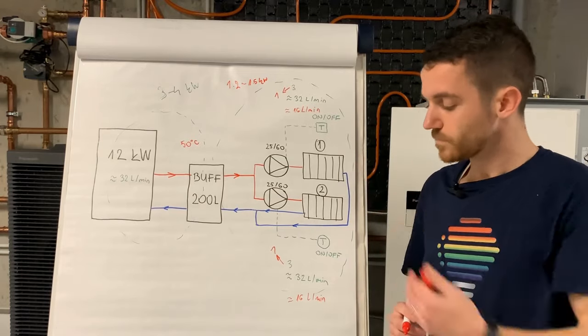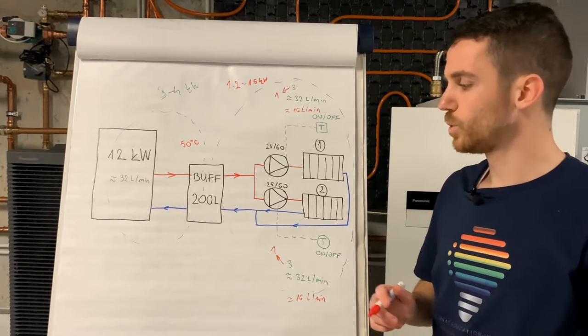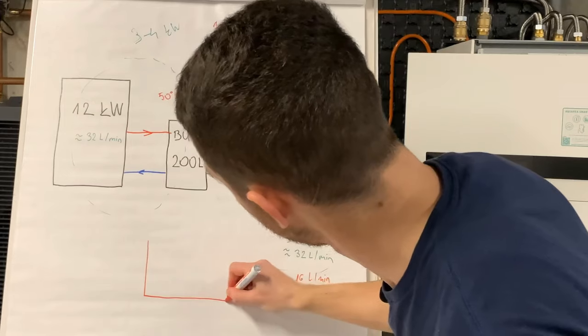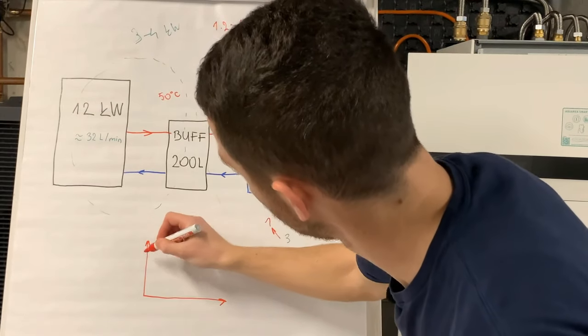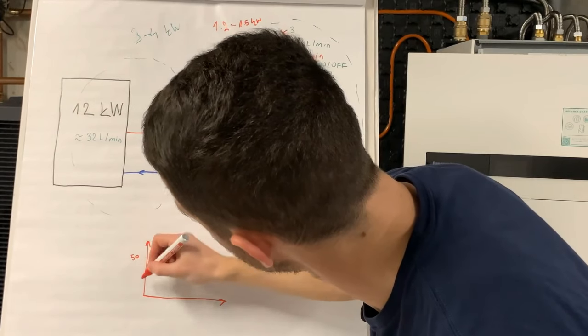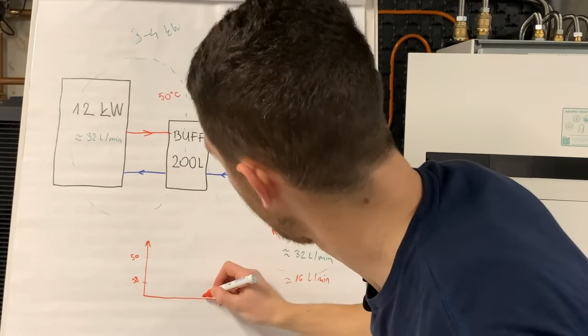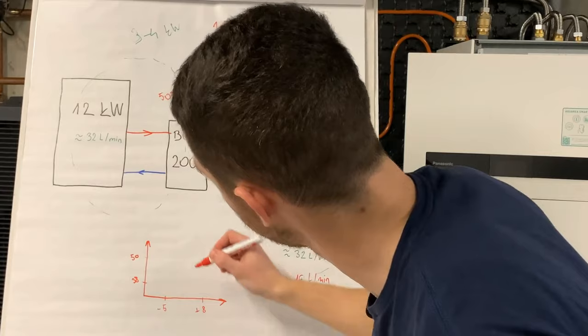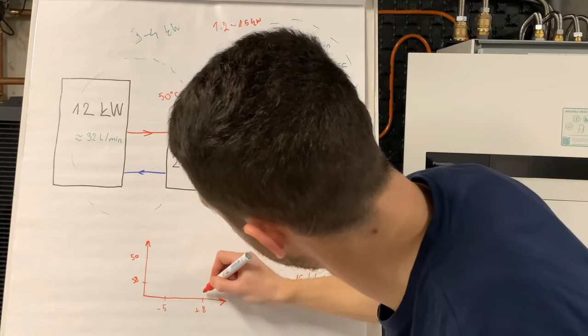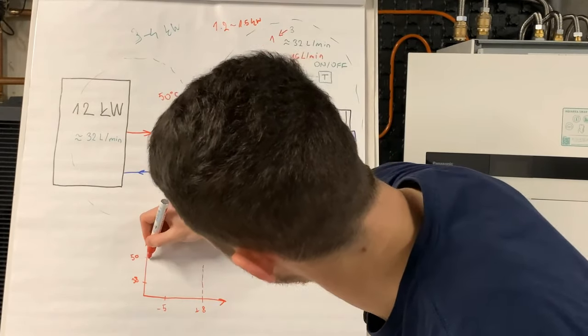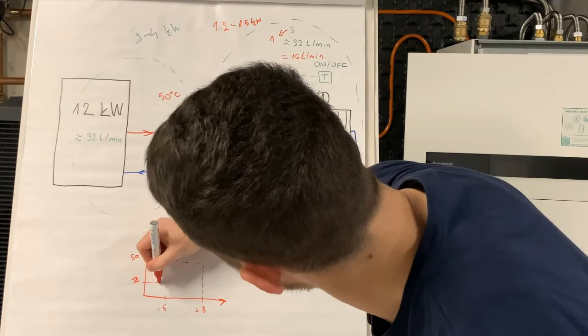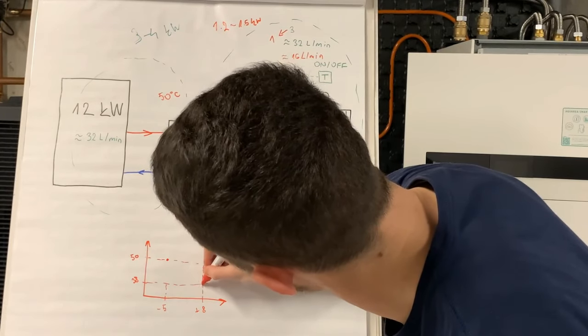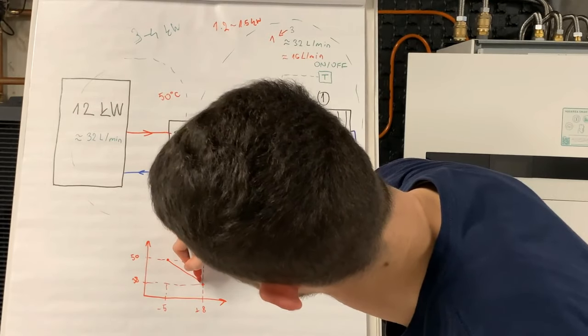After this modification, what we also did: we put compensation curve. Here is 50 degrees, here is 38, and here is minus 5, and here is plus 8.